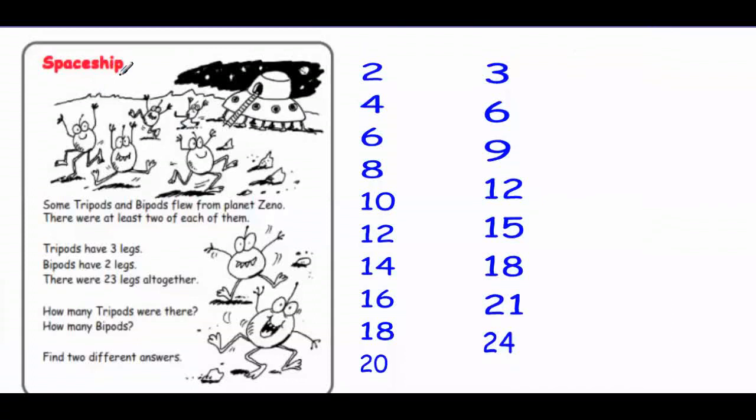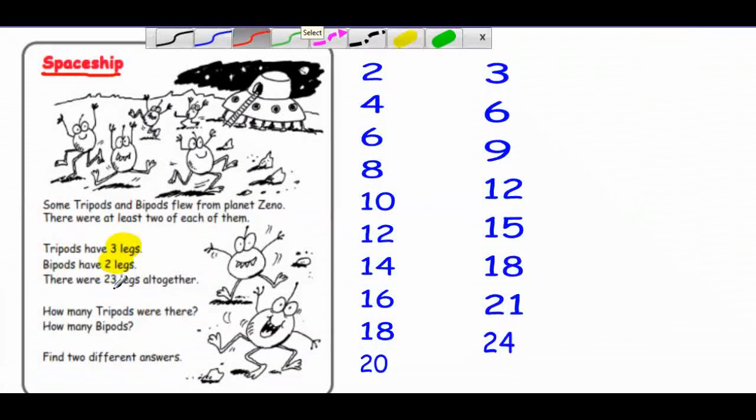I have the same story, but in different way. This time, the spaceship has tripods that have 3 legs and bipods that have 2 legs. When we counted the legs, we found 23 legs all together. So this time, I will make a list of multiples of 3 and a list of multiples of 2 and start checking the possible answers.